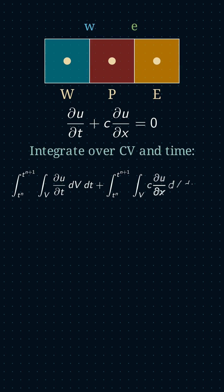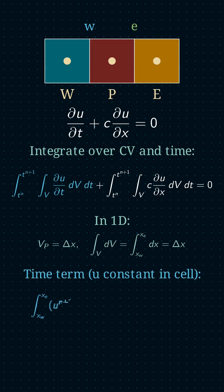We integrate the governing equation with respect to space and time. Now, since this is a one-dimensional case, the volume here is going to be simply the horizontal distance, and when we integrate the time term, this is what we get.